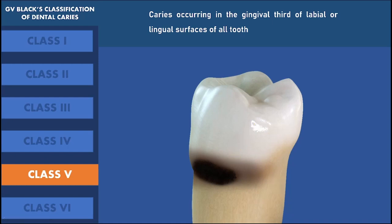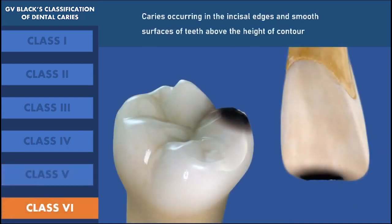Class 6 dental caries is a caries which occurs in the incisal edges and smooth surface of teeth above the height of contour. Caries which occurs at the cuspal heights or cusp tips of posterior teeth like a molar or a premolar, and the incisal edges of anterior teeth, are considered to be class 6. Class 6 dental caries is not an original G.V. Black classification, but it was included by Simon into the classification. Now, class 6 is also considered to be a part of G.V. Black's classification of dental caries.